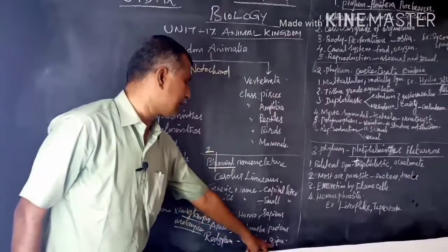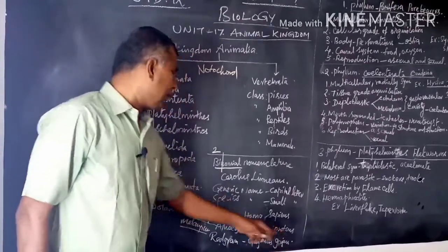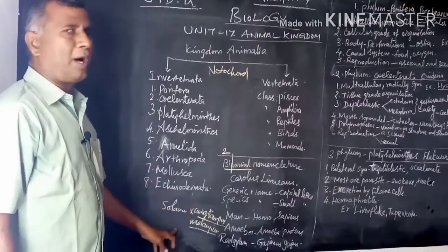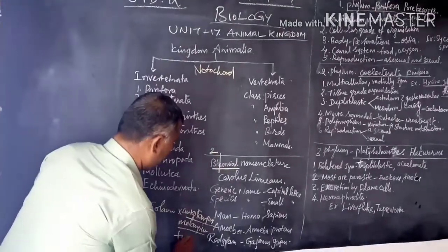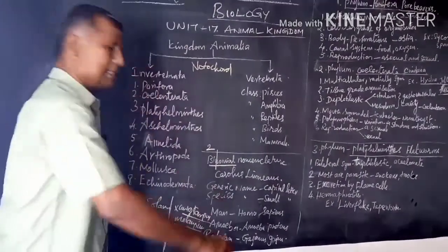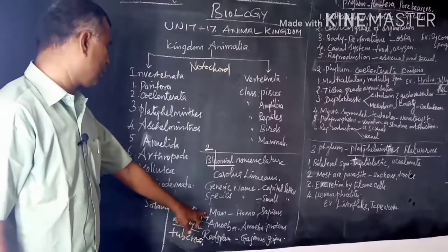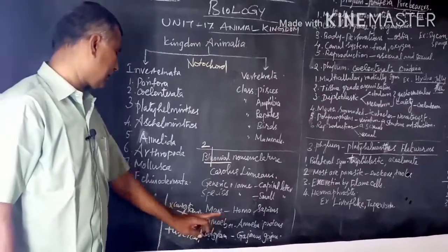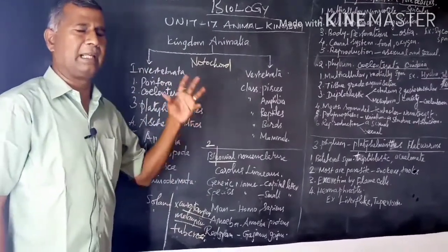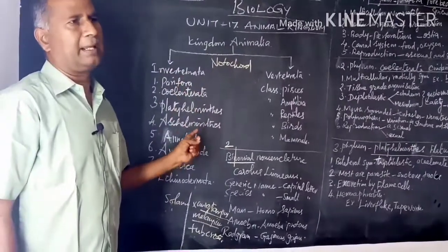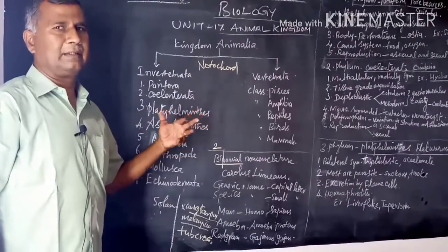Red gram is Cajanus cajan – Cajanus is the generic name, cajan is the specific name. A single genus can have more than one species. For example, Solanum xanthocarpum, Solanum melongena, and Solanum tuberosum. This genus Solanum belongs to the family Solanaceae. All over the world, each animal has two names: the generic name and the specific name. Examples: frog, cat.